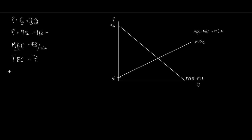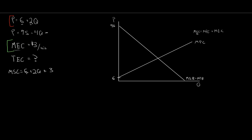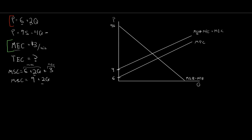So marginal social cost = (6 + 2Q) + 3 = 9 + 2Q. These are parallel lines — same slope of 2Q but the MSC starts at 9 instead of 6, shifted up by $3. I can visualize that: starting at 9, same slope, giving me my marginal social cost curve.